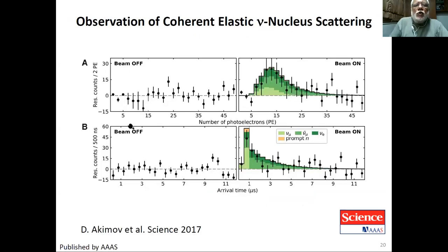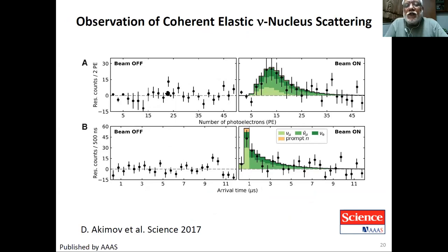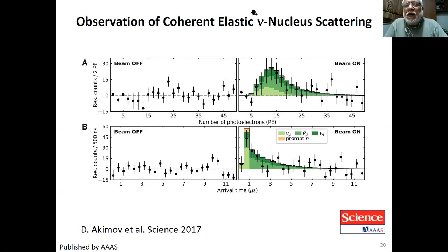The data shows energy spectra in terms of number of photoelectrons for beam-on and beam-off conditions, as well as arrival times. The energy spectrum has a peak around 15 photoelectrons, and the arrival time ranges from about half a microsecond to a few microseconds.